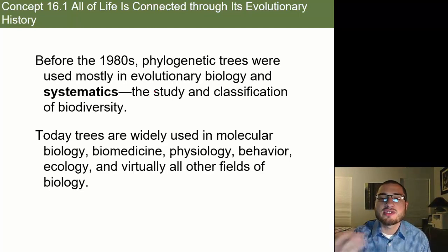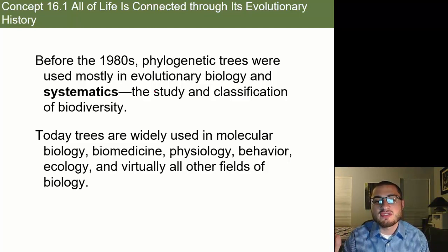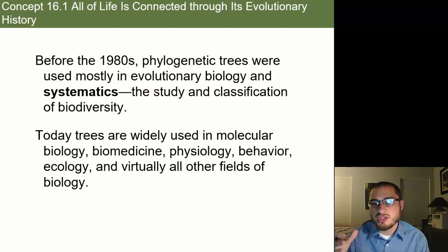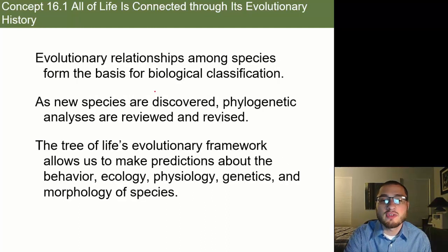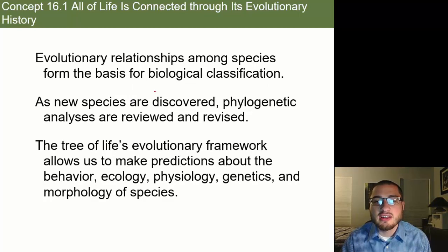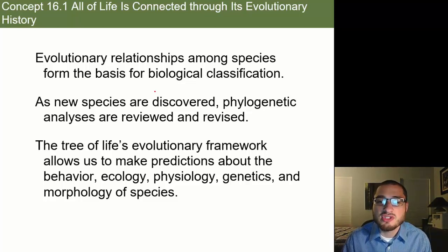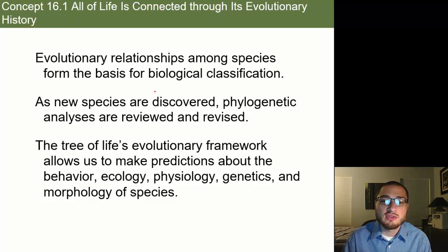Before the 1980s, phylogenetic trees were used mostly in evolutionary biology and systematics — the study and classification of biodiversity. Today we can use them for just about anything: molecular biology, physiology, biomedicine, behavior, ecology, and virtually all other fields in the life sciences. As new species are discovered, phylogenetic analyses are reviewed and revised, and the tree of life's evolutionary framework allows us to make predictions about behavior, ecology, physiology, genetics, morphology, and evolution.